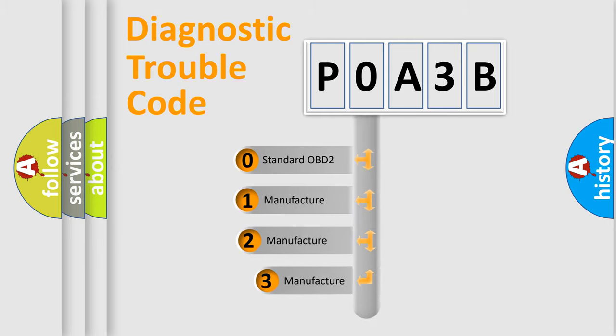If the second character is expressed as zero, it is a standardized error. In the case of numbers 1, 2, or 3, it is a manufacturer-specific error.